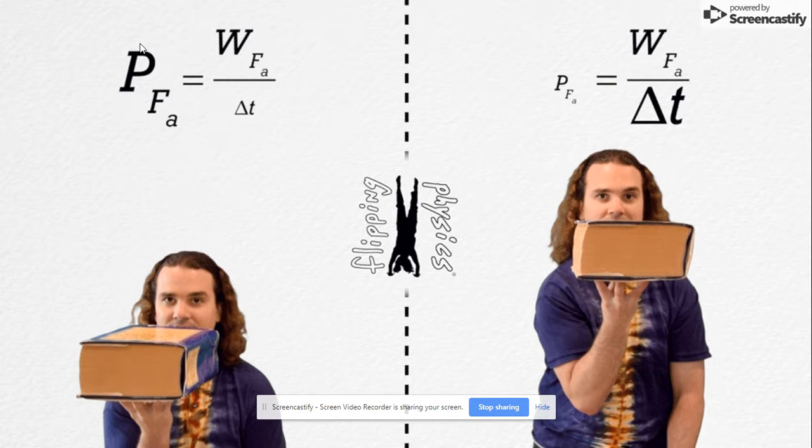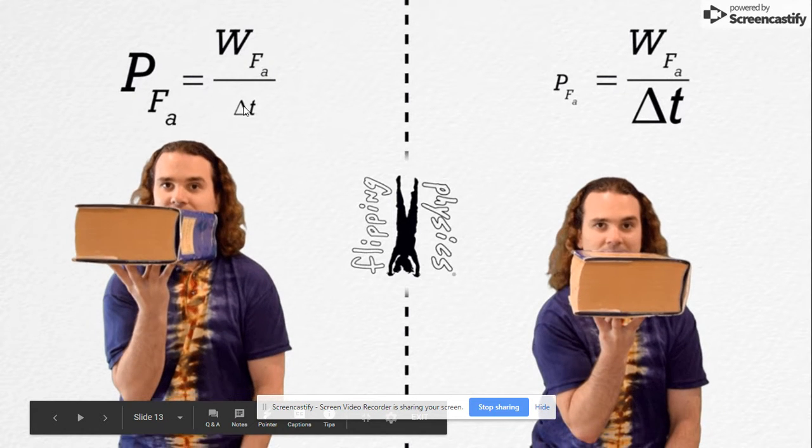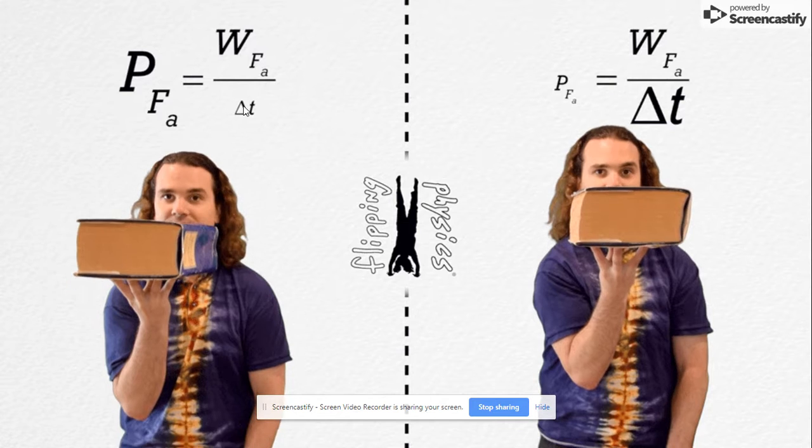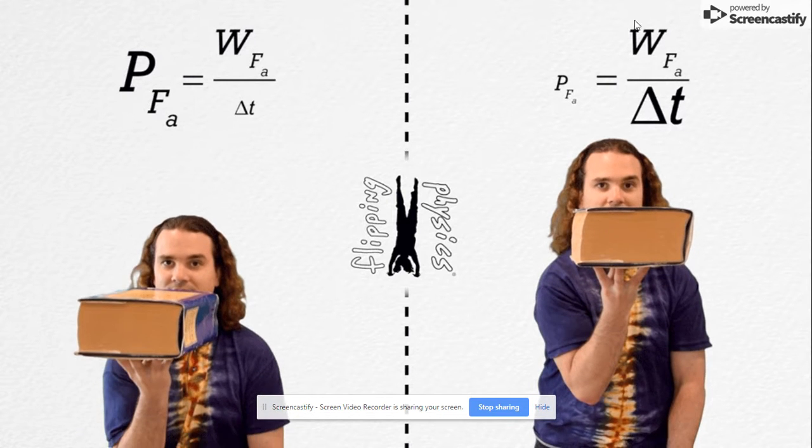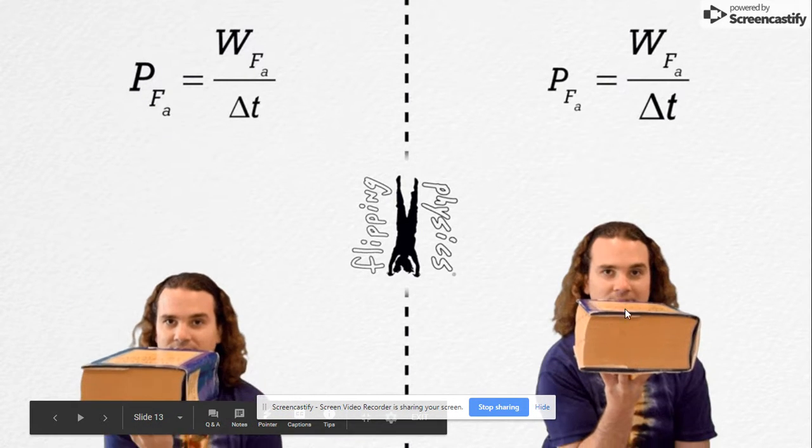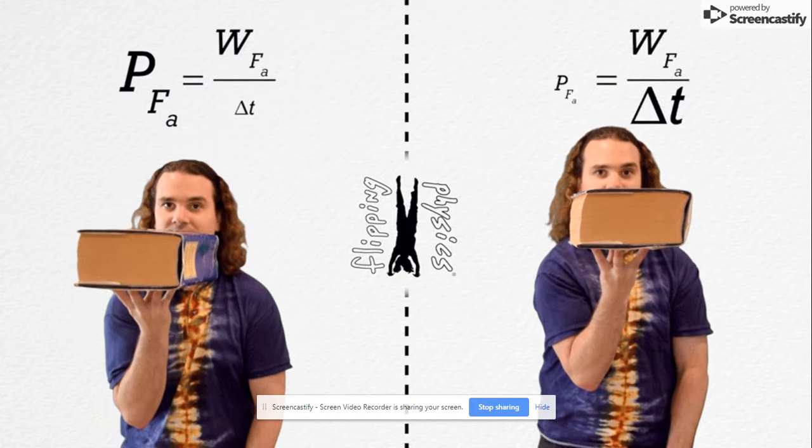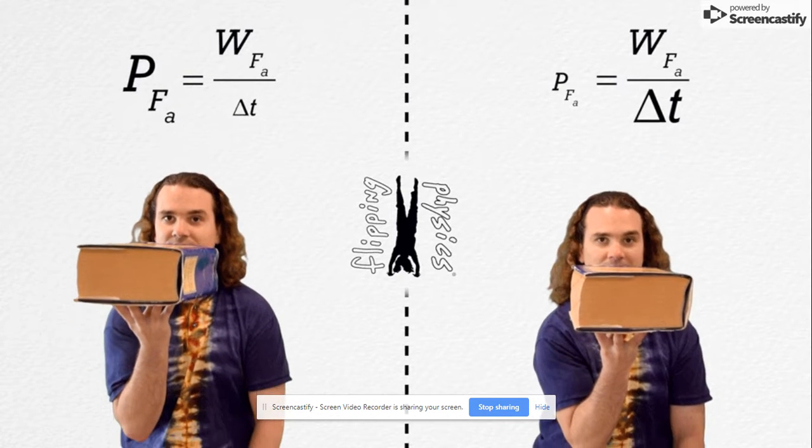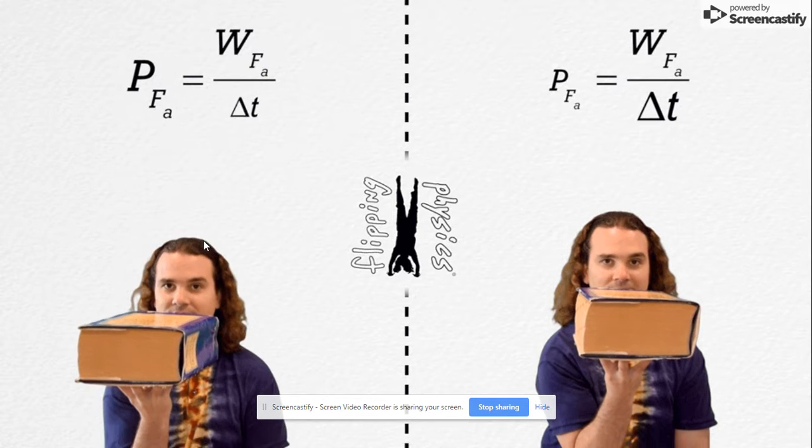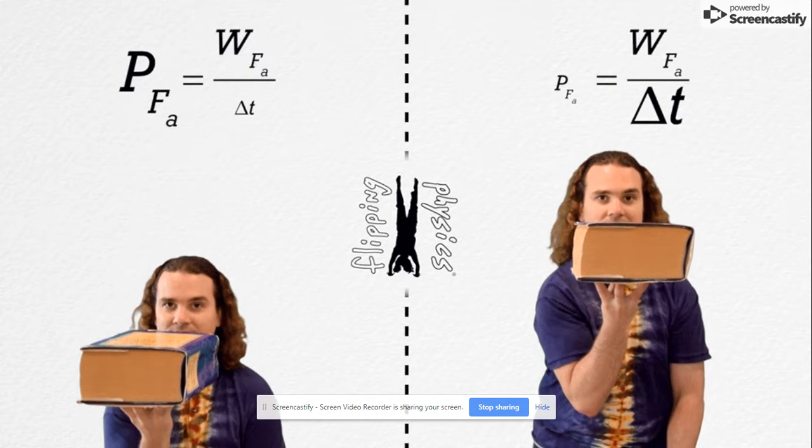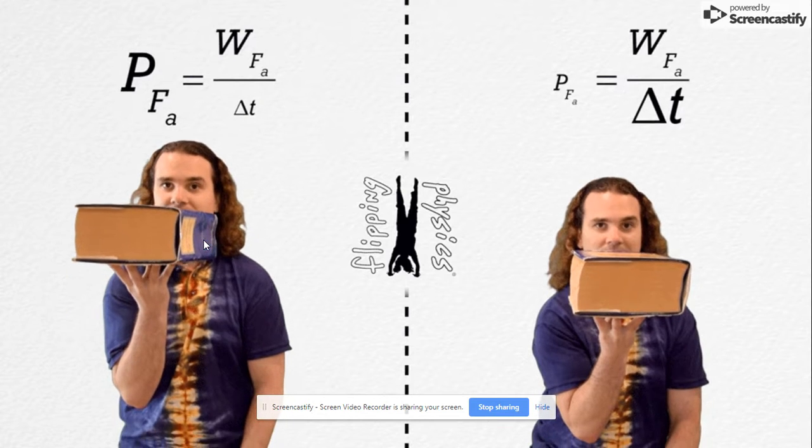This P right here stands for power. So it takes more power. The work is the same. The energy that is transferred to the book is the same. At the highest height, that book should have the same amount of gravitational potential energy stored in it, regardless of how fast it got to that height. So the same amount of work was done just over a longer period of time on the right-hand side, a shorter period of time on the left-hand side.